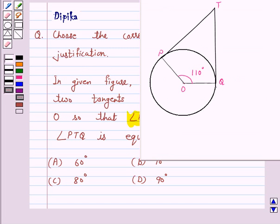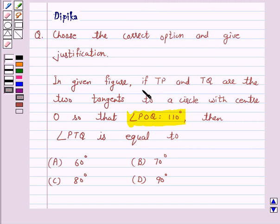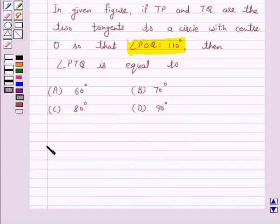if TP and TQ are the two tangents to a circle with center O so that angle POQ is equal to 110 degrees, then angle PTQ is equal to: A) 60 degrees, B) 70 degrees, C) 80 degrees, and D) 90 degrees. So let's start the solution.